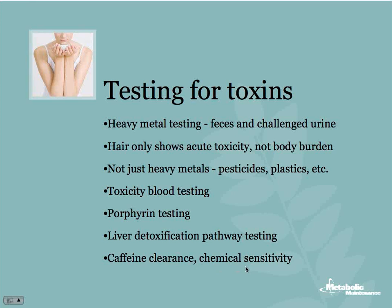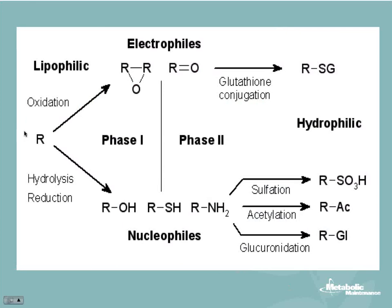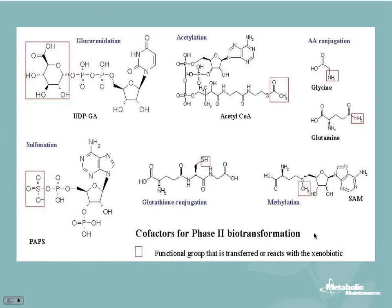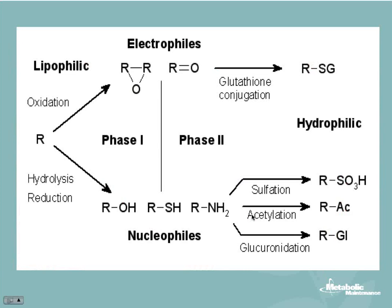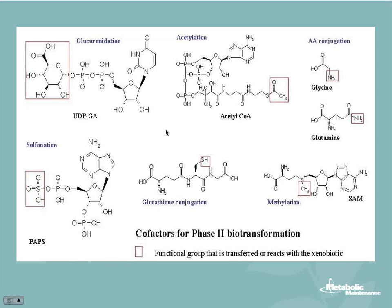This slide shows the molecular structures as a toxin goes through phase 1 and phase 2. On the left we have R, the toxin. It either goes through oxidation to become lipophilic and then gets conjugated with glutathione, or becomes hydrolyzed, becomes reduced, produces some free radicals, then has a sulfur group, acetyl group, or goes through glucuronidation in phase 2. The actual molecular structures show the atoms added to the toxin: glucuronidation, acetylation, amino acid conjugation, et cetera — these are how the liver goes through phase 2 detoxification.